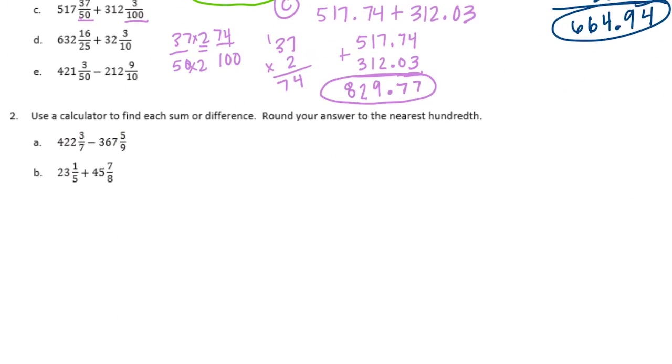Number 2. Use a calculator to find each sum or difference. Round your answer to the nearest hundredth. So 3 sevenths. The reason they chose these is because they're not easy to make them into tenths or hundredths, aside from 23 and 1 fifth.